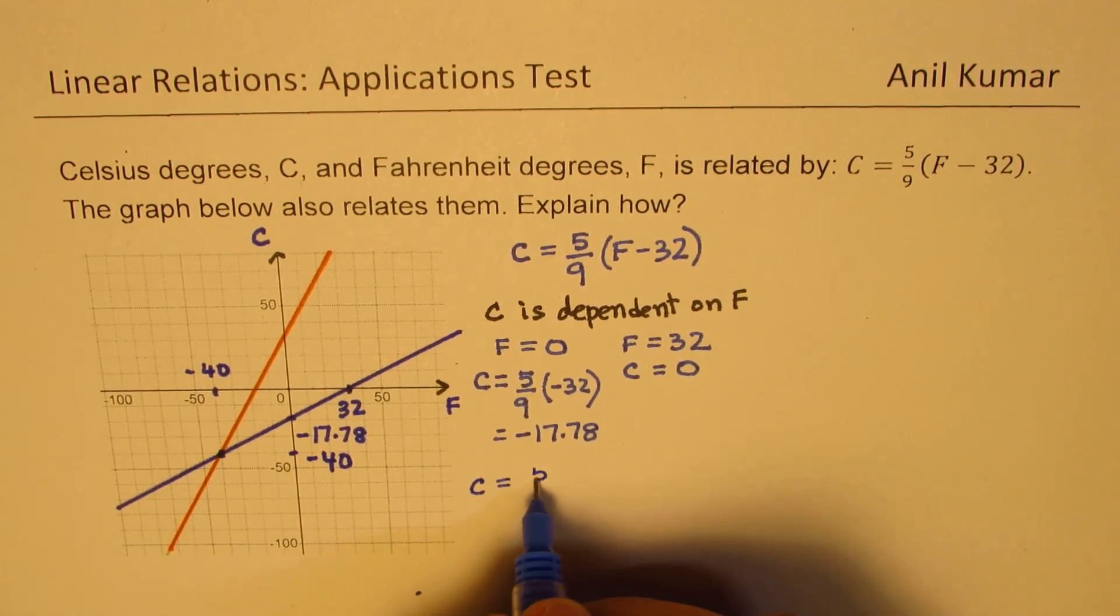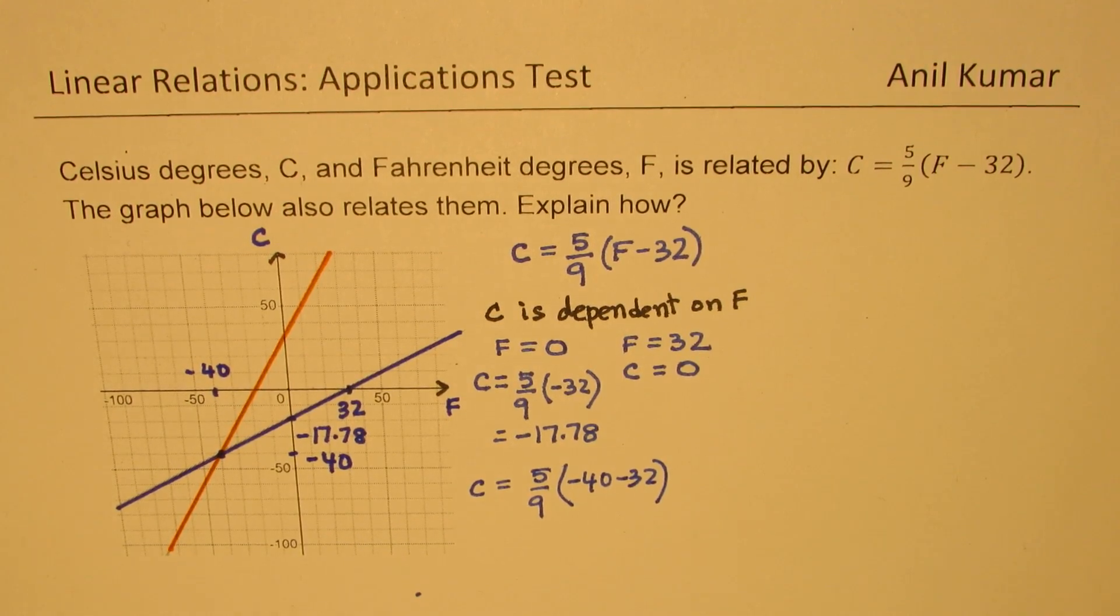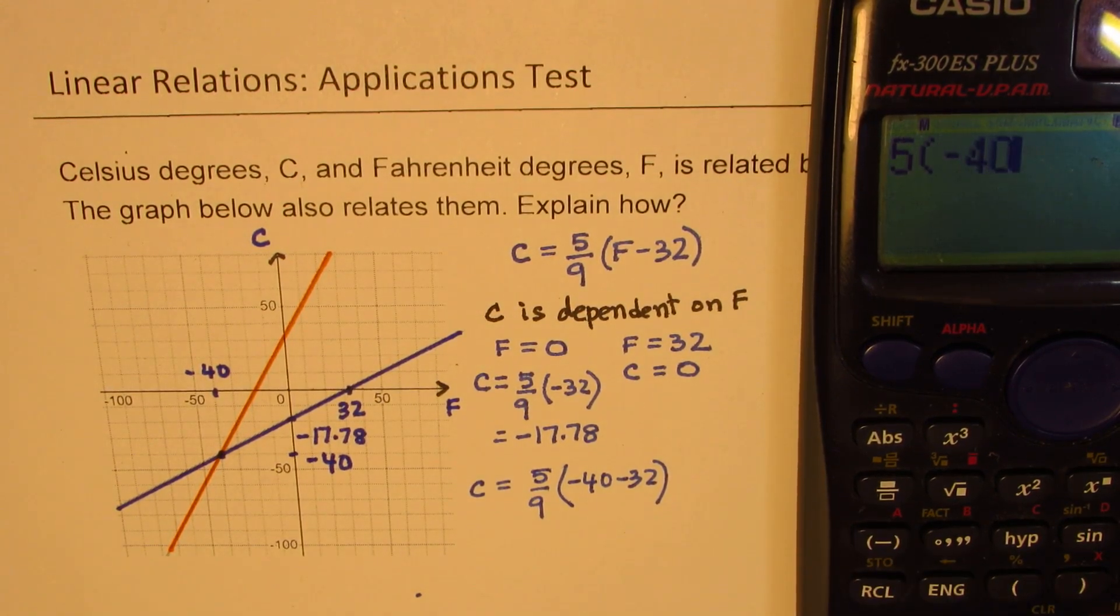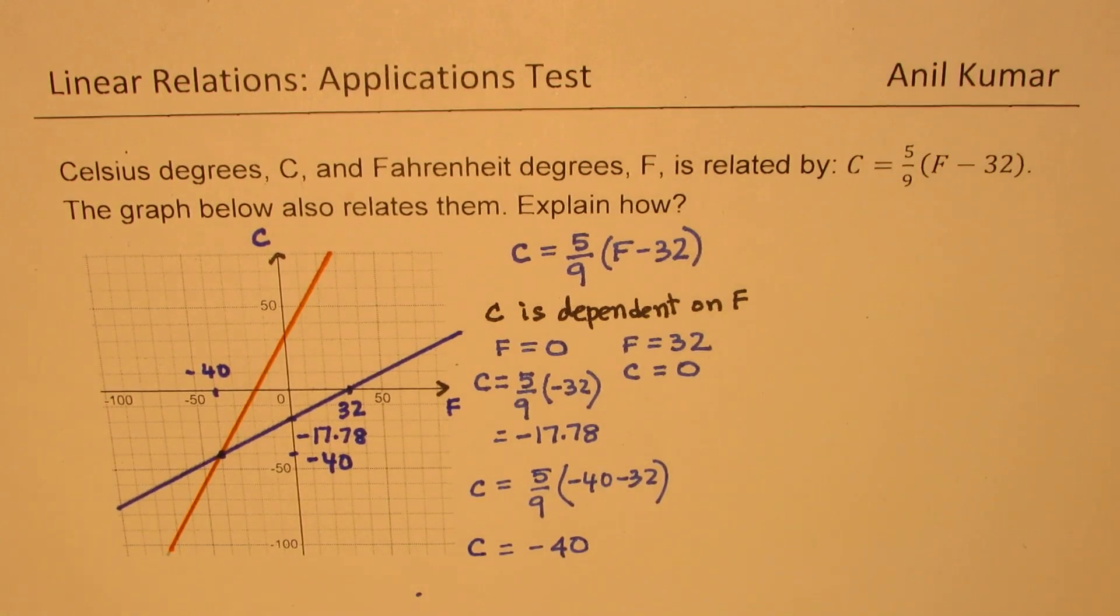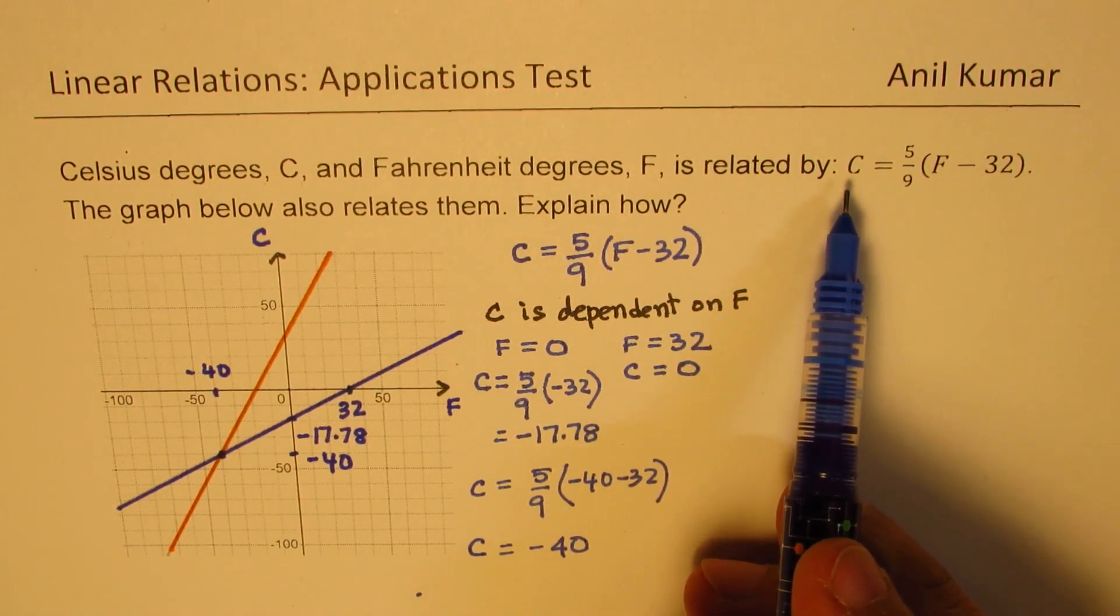C will be equal to 5 over 9 times minus 40 minus 32. We have 5, within brackets, minus 40 minus 32, bracket closed, divided by 9. It is minus 40.